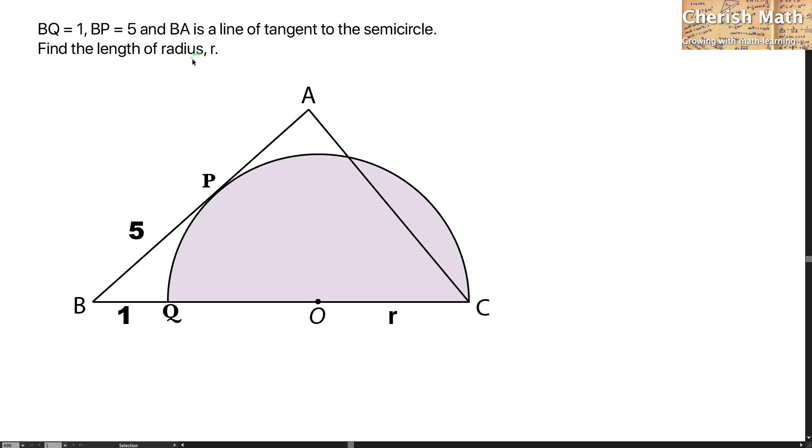Find the length of radius R by connecting a line from the center of the semicircle to point P. This is the radius of the circle, and I'm going to label it with the letter R here, same with OQ.